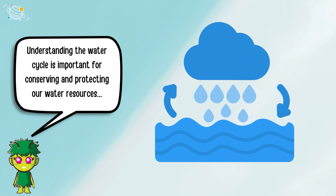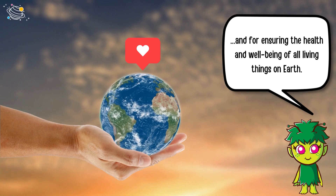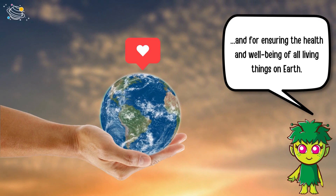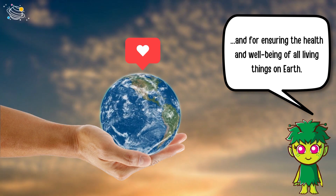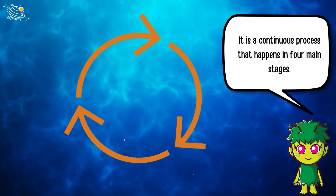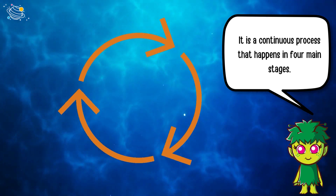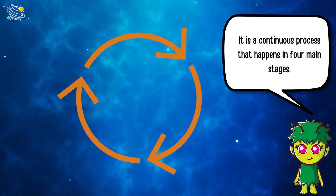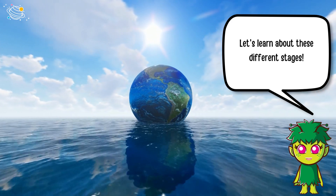Understanding the water cycle is important for conserving and protecting our water resources, and for ensuring the health and well-being of all living things on earth. It is a continuous process that happens in four main stages. Let's learn about these different stages.